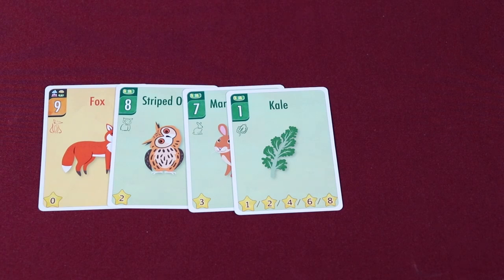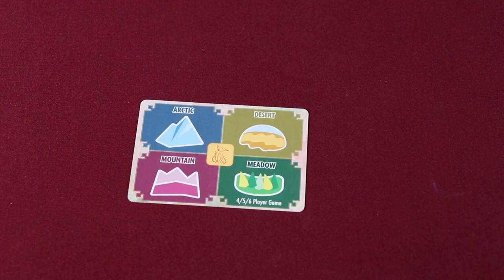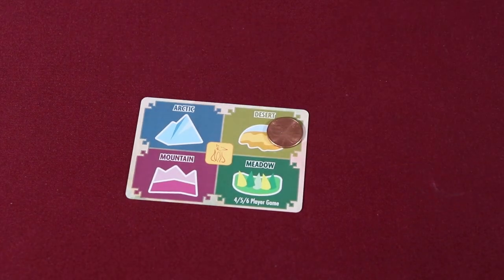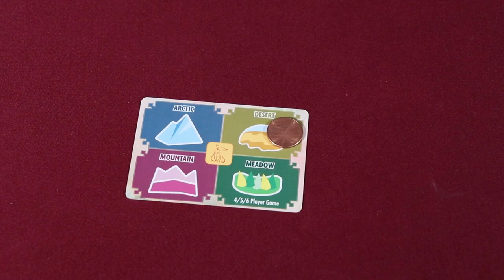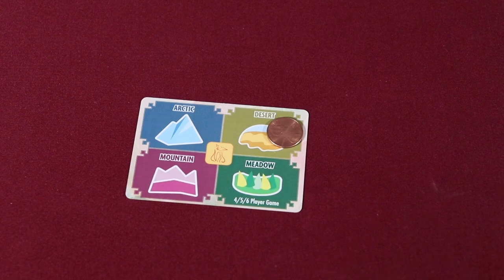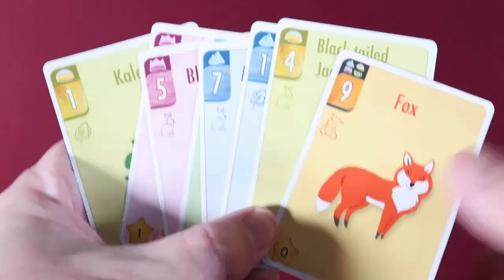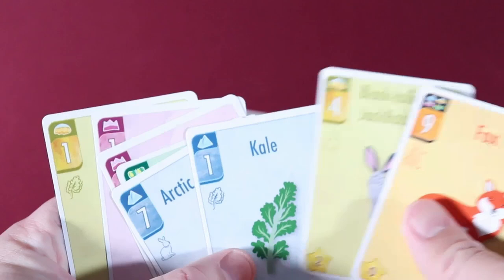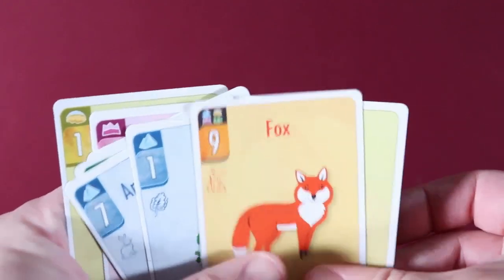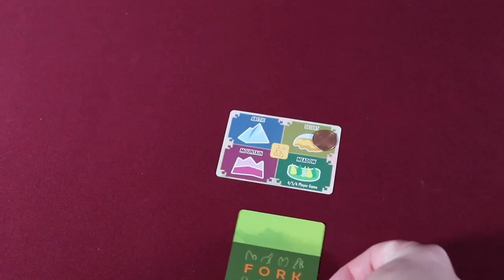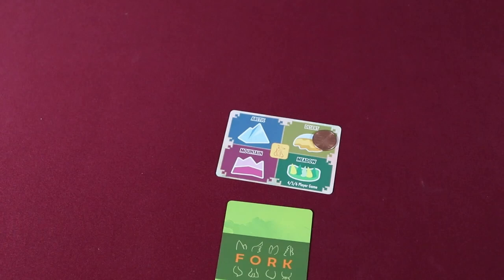To begin the round, the start player chooses one of the terrain types indicated on the terrain card. This action indicates the active cards that must, if possible, be played from all players' hands in this round. For instance, if the starting player chooses the desert, all players must play cards that match the desert suit. With the exception of the fox, which can be played at any time and is always considered to be part of the current active terrain.